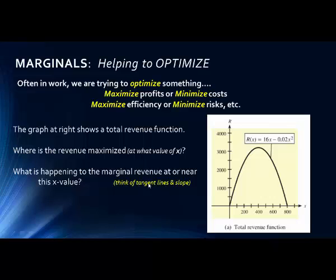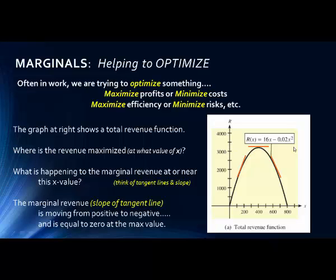What is happening to the marginal revenue near the maximum? Marginal revenue is a derivative, and derivatives represent slopes of tangent lines. On the left side of the graph, the slope is positive (function increasing); on the right side, the slope is negative (function decreasing). Moving from positive to negative, the derivative must equal zero at the peak, since the slope of a horizontal line is zero. So we set the derivative equal to zero and solve for that input value.